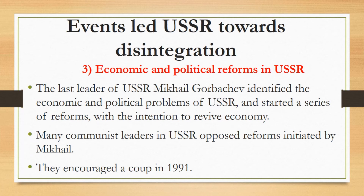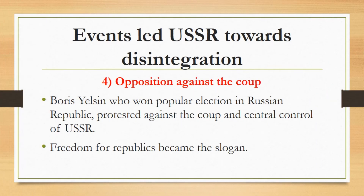The last leader of the USSR, Mikhail Gorbachev, identified the economic and political problems of the USSR and started a series of reforms with the intention to revive the economy. This was a deviation from communist policies and was more closely associated with market economy. Many communist leaders in the USSR opposed these reforms and encouraged a coup in 1991. Boris Yeltsin, who won popular elections in the Russian Republic, protested against the coup and the central control of the USSR. The pluralist movement advocated democratization and rapid economic reforms, while the hardline communist elite wanted to thwart Mikhail's reform agenda.